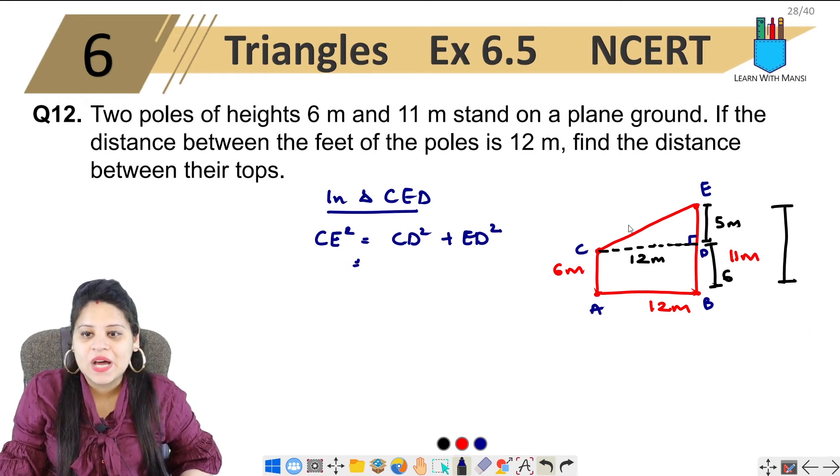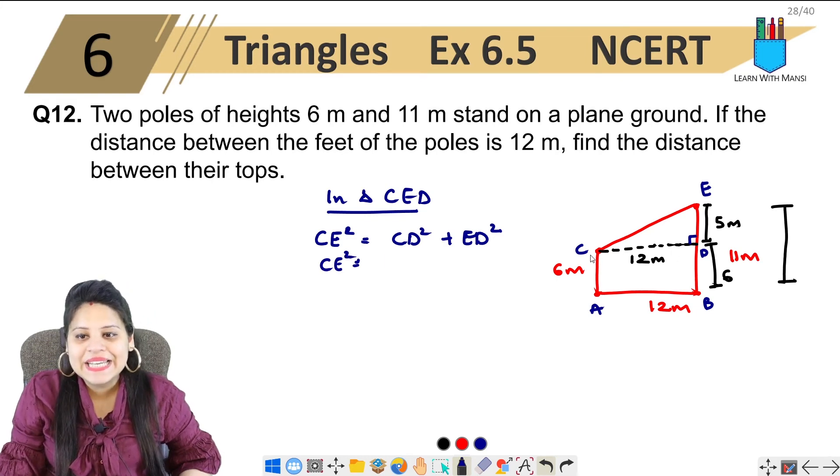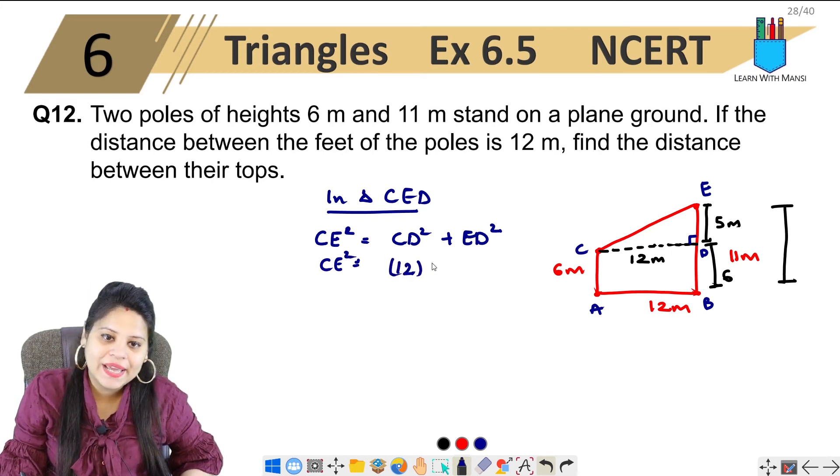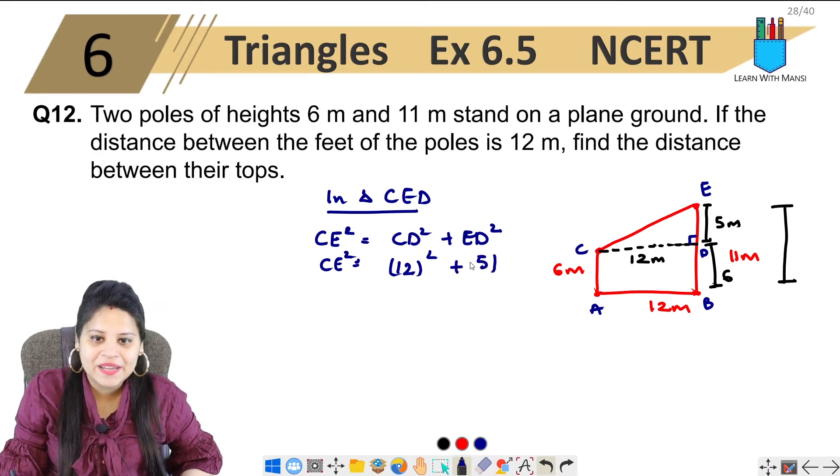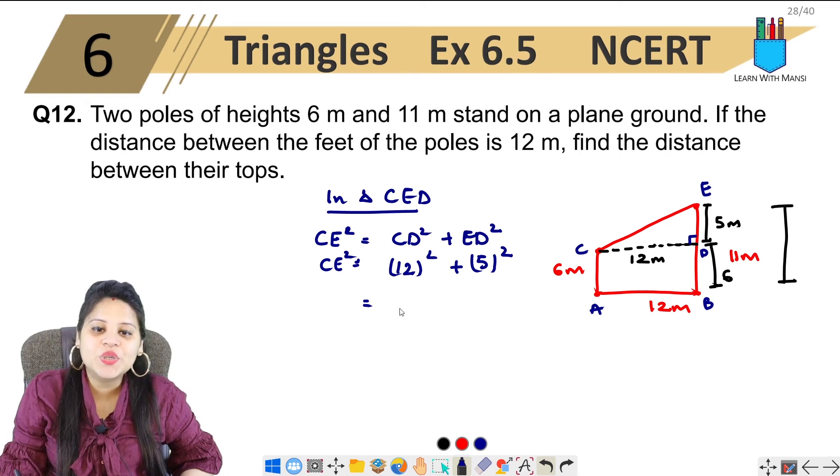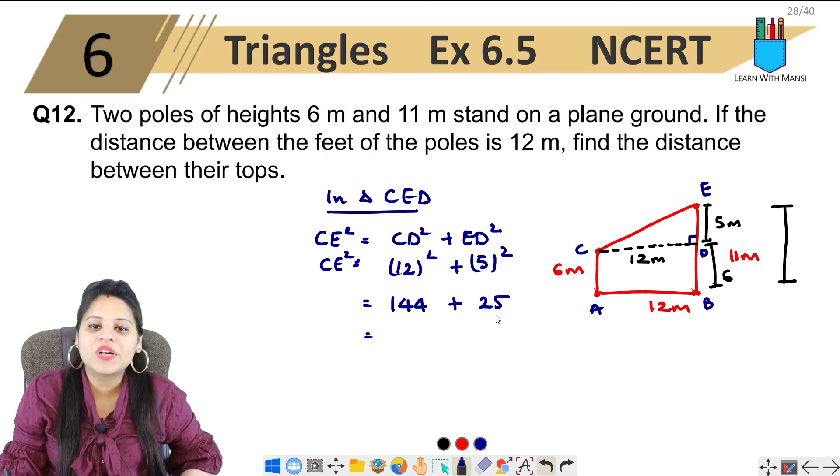So, CE. Now this is our hypotenuse. We need to find this. We know CD is 12. So, 12 square plus ED is 5. So, 5 square. This is equal to 12 square, 144 plus 5 square is 25.